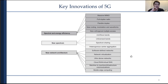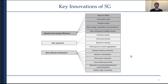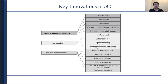The last part of this introduction covers the key innovations of 5G. These technologies can be roughly classified into three categories: spectral and energy efficiency, new spectrum, and new network architecture. In this tutorial we will go through each of these, beginning with new spectrum — the most foundational layer — covering millimeter wave bands and techniques like spectrum sharing and carrier aggregation.